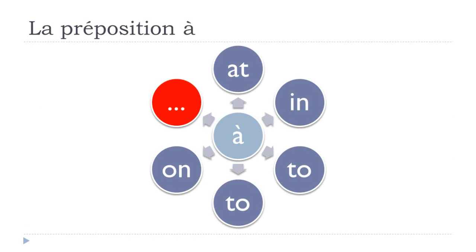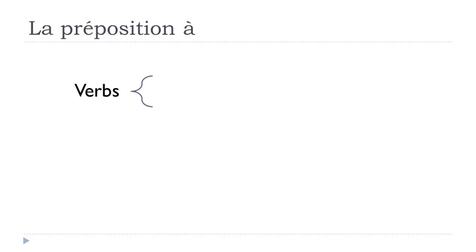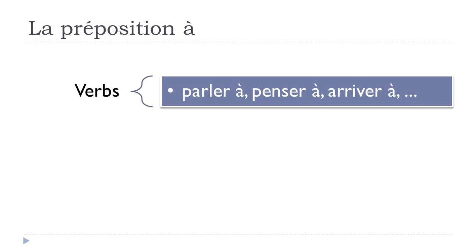Now let's see other possibilities. With verbs — some verbs require this preposition à. For example: parler à (to talk to), penser à (to think about someone or something), arriver à (to succeed in doing something). You should use this preposition à with these verbs. Students typically learn these verb-preposition combinations little by little as they encounter new verbs.